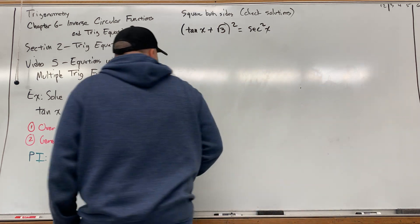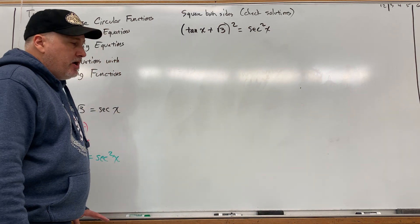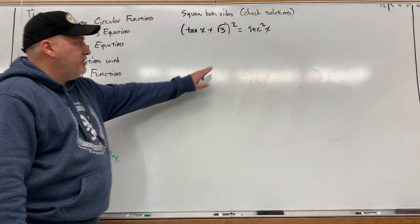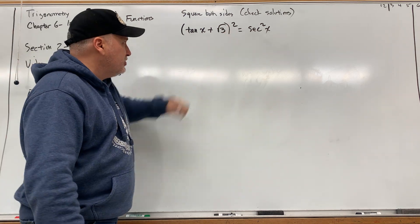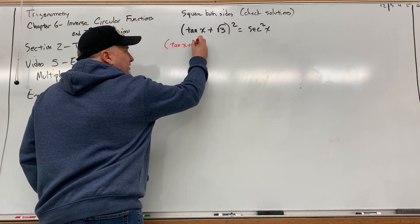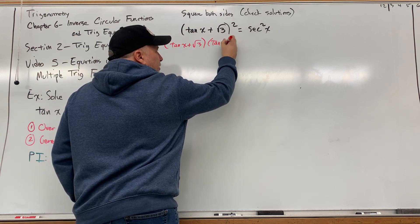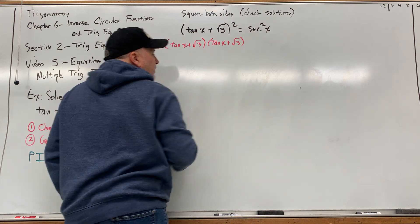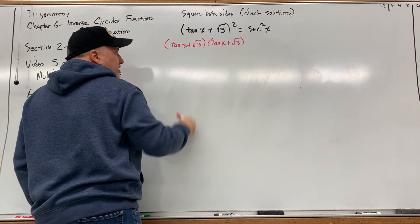Now the square that got on the left, do not distribute the square. There is no distributive property that says you can distribute a square across a plus. Instead, we need to write it twice and foil it like we normally would when squaring a binomial. If we foil this, the first part is tangent squared.